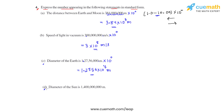Coming to part D, which is the diameter of the Sun, we need to get the decimal between 1 and 4. The decimal is currently after the last digit, which is 0. Moving the decimal towards left by 9 places gives our answer as 1.4 × 10⁹ meters. This is the diameter of the Sun in standard form.